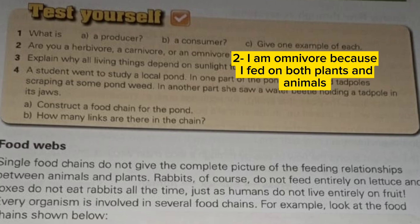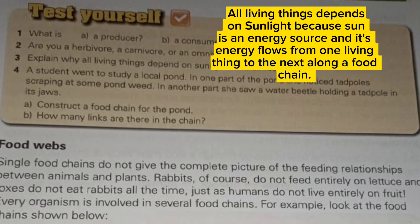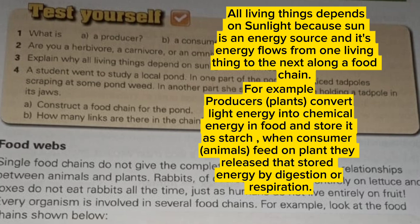I am an omnivore because I feed on both plants and animals. All living things depend on sunlight because the sun is an energy source and its energy flows from one living thing to the next along a food chain. Producers such as plants convert light energy into chemical energy and store it as starch. When consumer animals feed on plants, they release that stored energy through digestion or respiration.